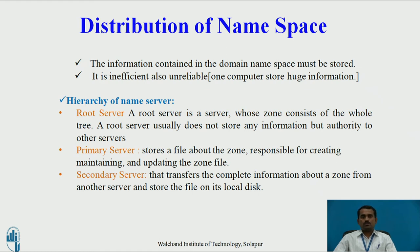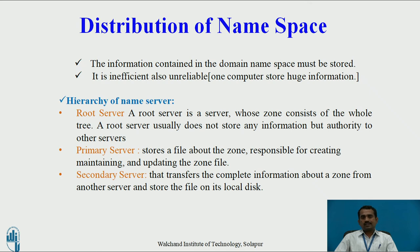The first is the root server, where we use root and zone. A root server is a server whose zone consists of the whole tree. The root server usually does not store any information, but delegates authority to other servers. Based on that, there are two servers: a primary server and a secondary server. The primary server has authority to store the file about the zone, with responsibility for creating, maintaining, and updating the zone files. The secondary server transfers complete information about a zone from another server and stores the file on its local disk. Both the primary and secondary servers have equal authority for maintaining the server.